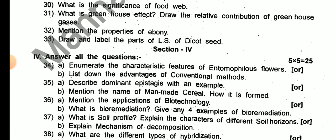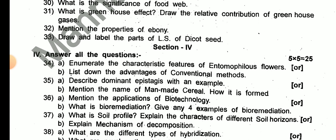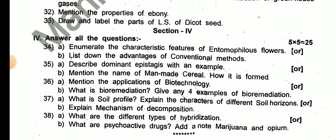For 5-mark questions (5 x 25): Enumerate the characteristic features of entomophilous flowers. List out the advantages of conventional breeding methods. Describe dominant epistasis with an example. Mention man-made cereals and how they were formed. Mention applications of biotechnology. What is bioremediation — give any 4 examples. What is soil profile? Explain the characters of different soil horizons. Explain the mechanism of recombination. What are the different types of pyrodiation? What are the psychoactive drugs?